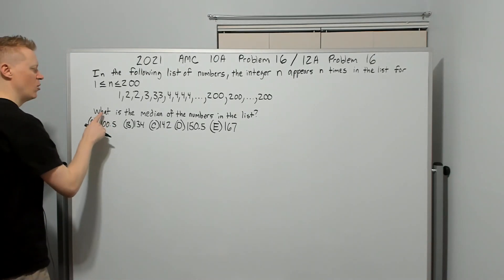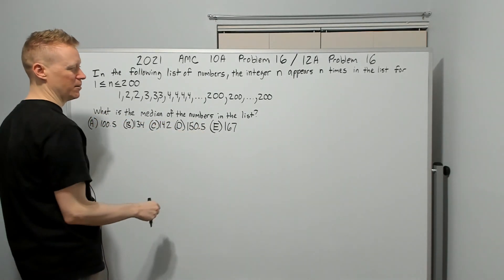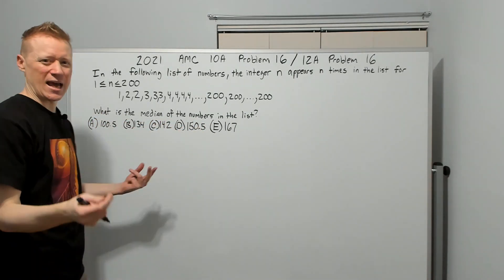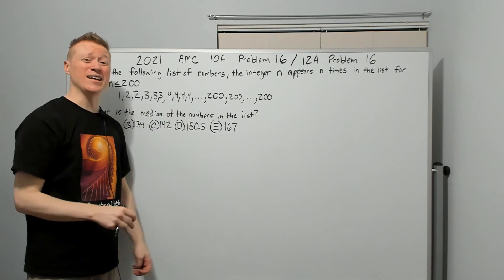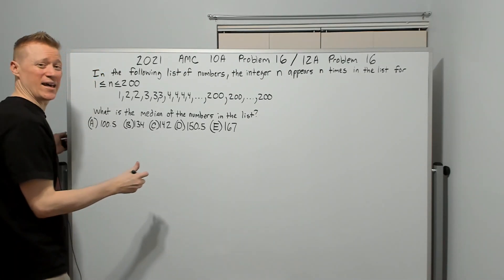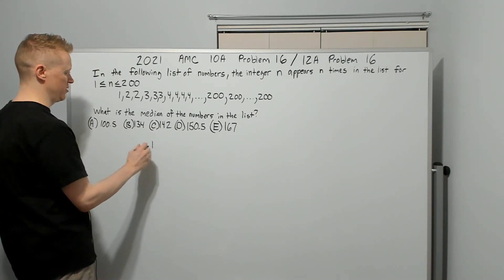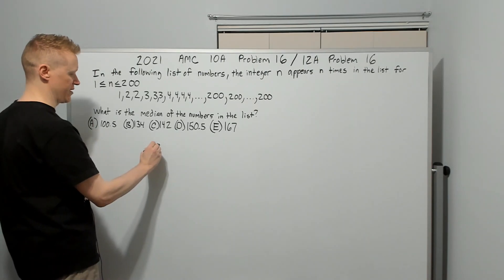What is the median of the numbers in the list? Well, the median is just the average of the two middle terms. We probably want to know how many terms are in the list and let's just find that out first.